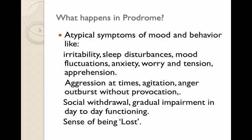What happens in a prodrome? There are often atypical symptoms of mood and behaviour, such as irritability, sleep disturbances, mood fluctuations, anxiety, worry, tension and apprehension. People may become aggressive, agitated and have angry outbursts without provocation. And there may be social withdrawal, with a gradual impairment in day-to-day functioning, and the person themselves may describe a sense of being lost.